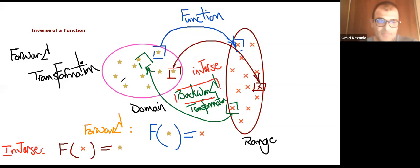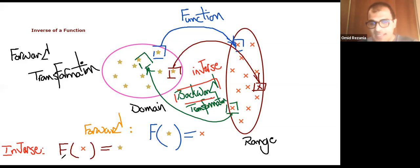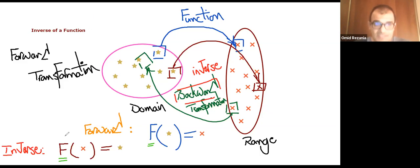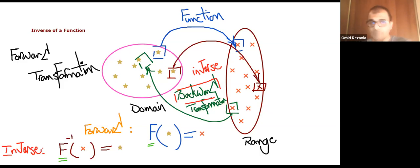However, we can reverse things — we can move backward. Now imagine I'm at one of the elements in the range of a function and I just want to jump back to the domain. This is said to be a kind of a backward transformation. Does it make sense to everyone? The function f has a forward transformation. I can also find another method to show the backward transformation.